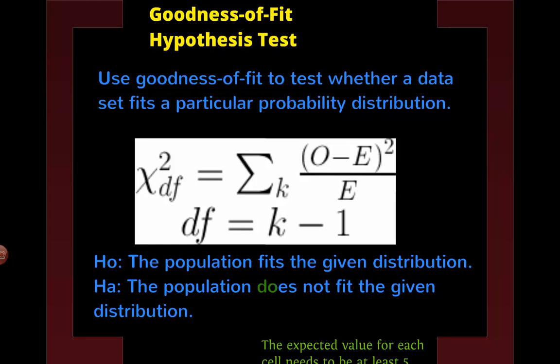Let's look at a town example. The distribution of TVs nationally is: 6% have no TV, 10% have one TV, 24% have two TVs, and 60% have three or more TVs. Then they're going to look at a town and say, here's what we found when we surveyed this town for how many TVs they had. Does this town fit the national distribution?